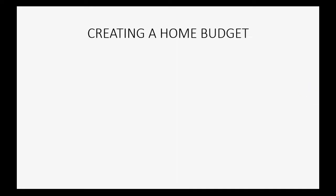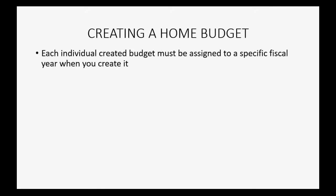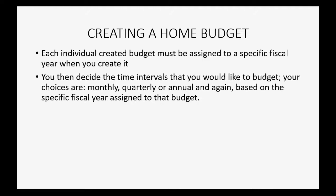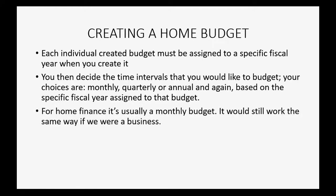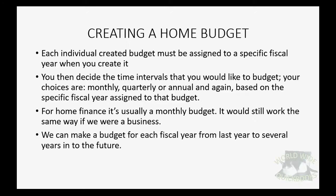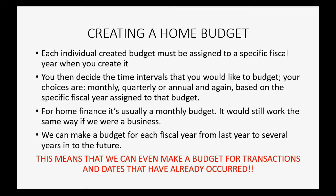Before creating a home budget, you should know that each individual budget must be assigned to a specific fiscal year when you create it. You then decide the time intervals you would like to budget — monthly, quarterly, or annual — based on the fiscal year assigned to that budget. For home finance, it's usually a monthly budget. We can make a budget for each fiscal year, from last year to several years into the future, meaning we can even budget for transactions and dates that have already occurred.